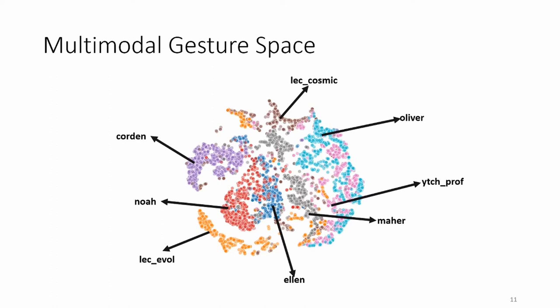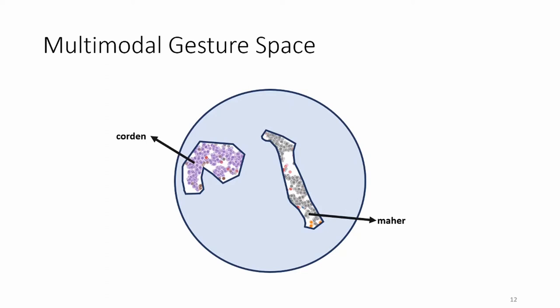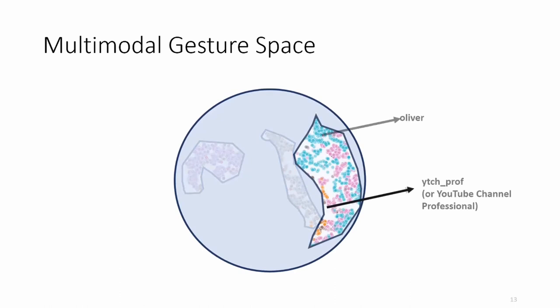Each color forms a region representing the gesture style of one speaker. In this space, there are a total of eight speakers. In the scope of this work, data for each of these speakers was available during training, and hence we can perform within-domain style transfer by hopping from one region to the other. Qualitatively, we can infer the similarities among different styles based on the region occupied. For example, Gordon and Maher have largely different styles of gesturing, hence they are cleanly separated in the gesture space. On the other hand, Oliver and YouTube channel Professional have some common gestures, hence they occupy the partially overlapping regions.